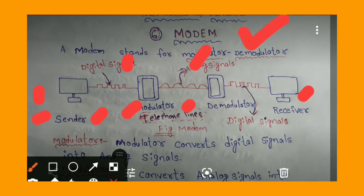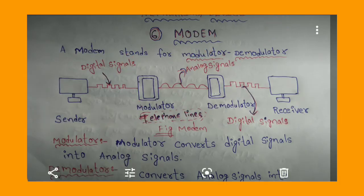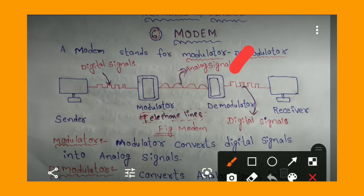These analog signals are passed through the telephone lines, since telephone lines carry analog signals. On the receiver side, the Demodulator converts the analog signals back into digital signals.